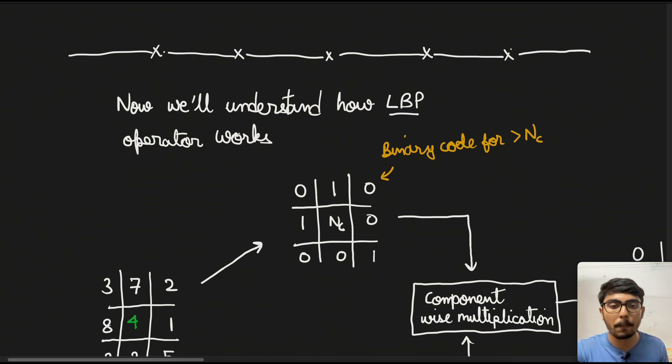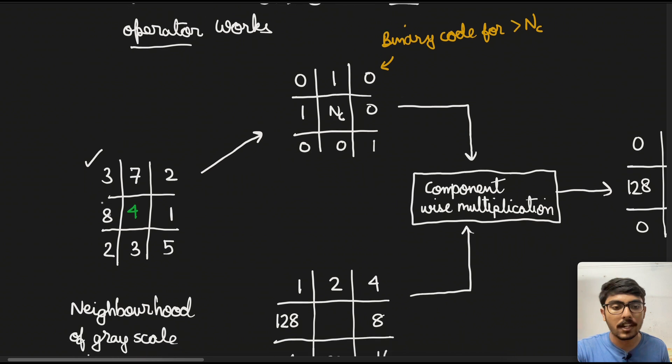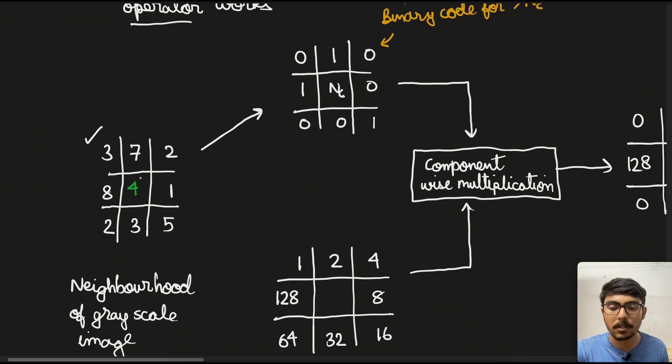Now we see how LBP operator works. It has to operate over another image so that we get the result. Suppose this is the neighborhood of the grayscale image that we will be studying. Here, 3, 7, 2, 8, 2, 3, 5, 1, and the center pixel is 4.